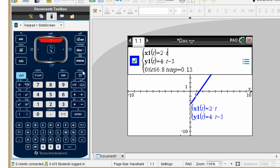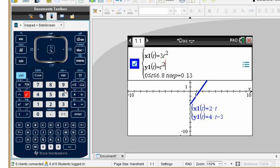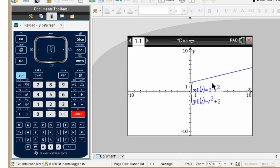So we go over here, x equals 3t squared, y equals t squared plus 2. And we're going to leave the standard time and so forth. So we get this line. Looks like our y-intercept is 2.